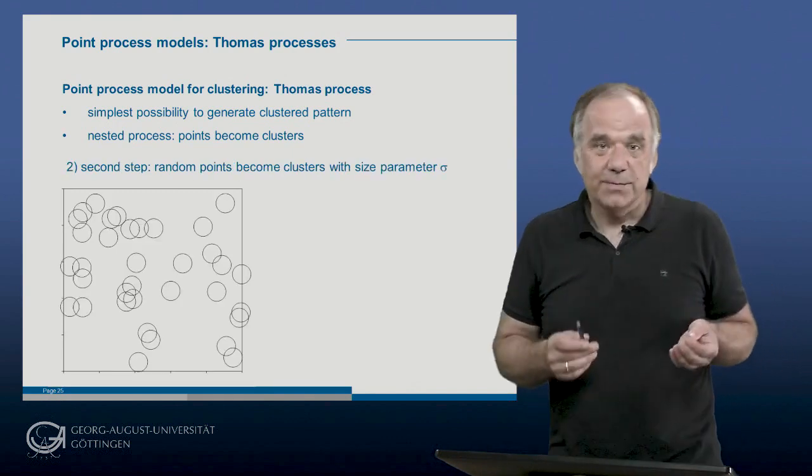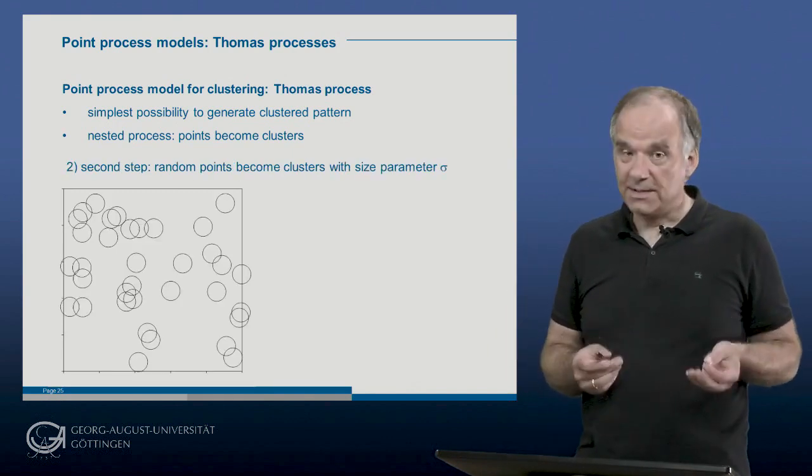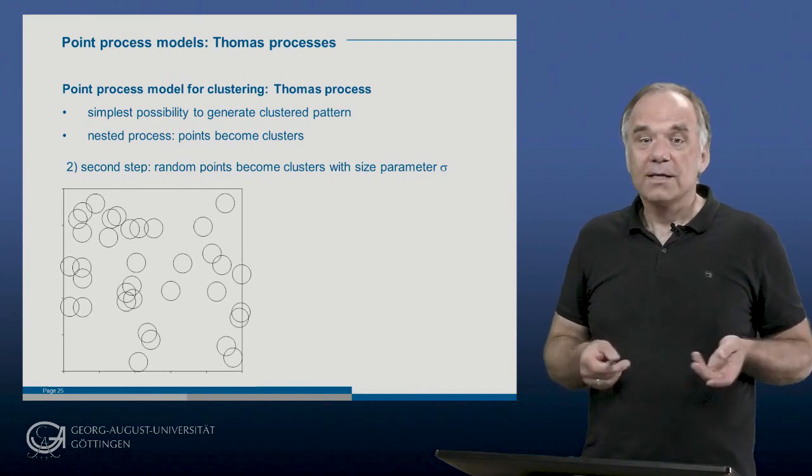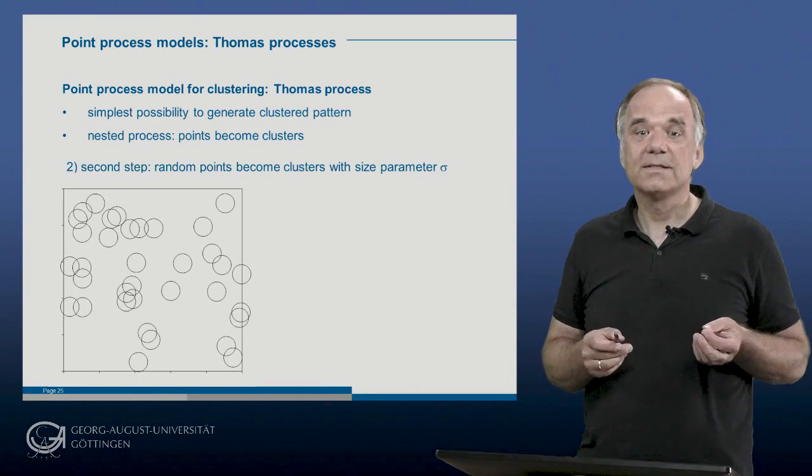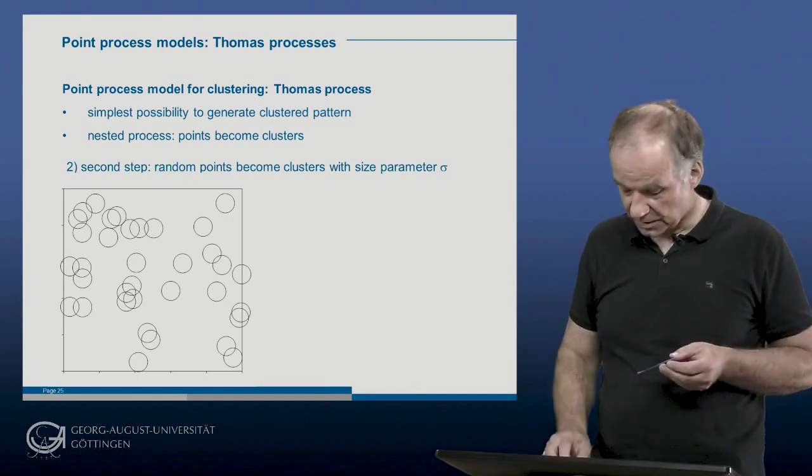In the second step, the random points become clusters. They are indicated here by the circles of a given width, sigma. And sigma is the second parameter of the Thomas process.